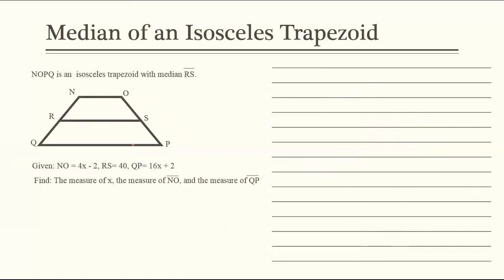Next. Dito may mga variable na. NOPQ is an isosceles trapezoid with median at RS. NO is 4x minus 2 upper base. RS is 40 yung given yung median. And QP is 16x plus 2. Find the measure of x or the value of x, the measure of NO, NQP. Kasi hindi naman specific yung measure ng NO, NQP. So to solve that,